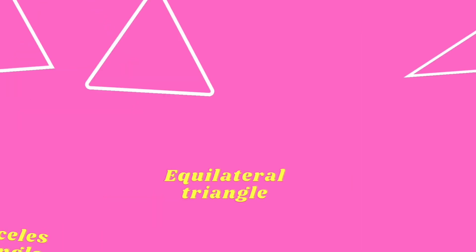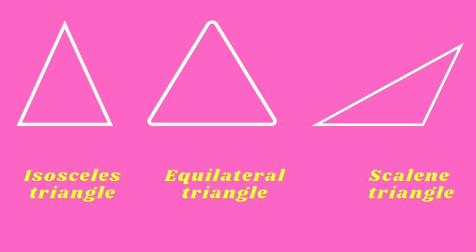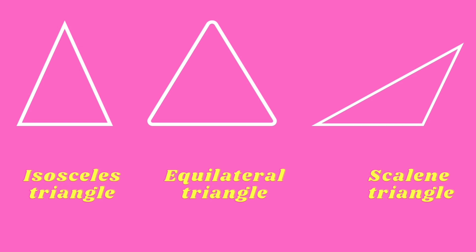Based on the length of the sides, the triangle is of three types. Equilateral triangle, which has all three equal sides. Isosceles triangle, which has two equal sides. And scalene triangle, with no equal sides.